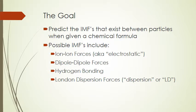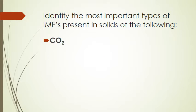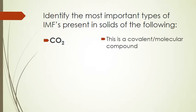As we go through the examples, I'd strongly recommend you pause the video and try the questions yourself, then listen to the explanation. The first example: identify the most important types of IMFs present in carbon dioxide. We notice it's made of carbon and oxygen, which are just nonmetals, so carbon dioxide must be a molecular substance — not ionic. Since it's molecular, it must have London dispersion forces between the particles.